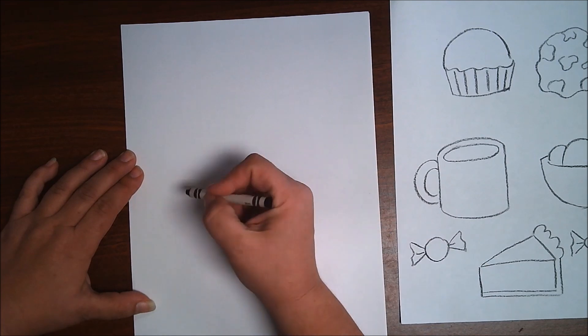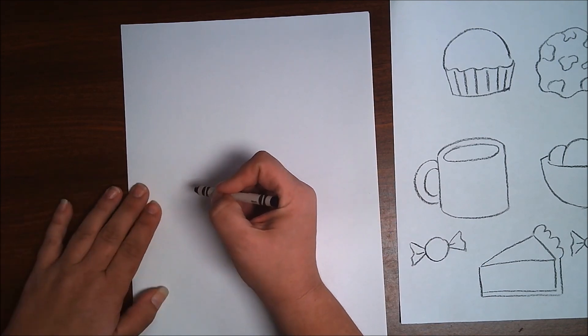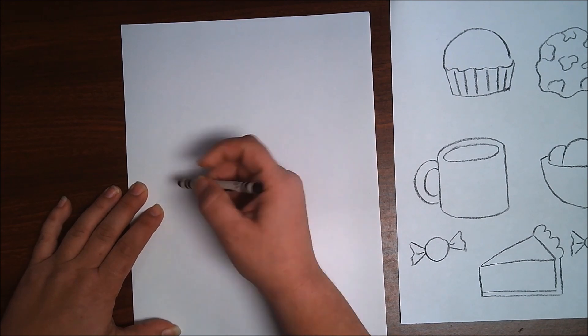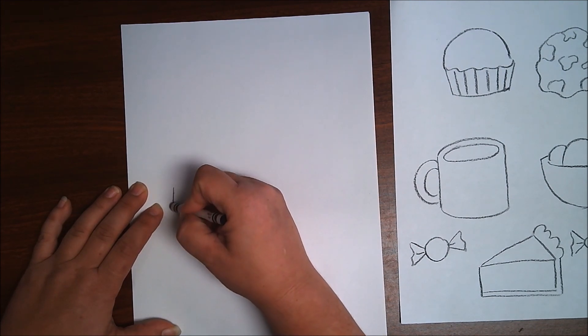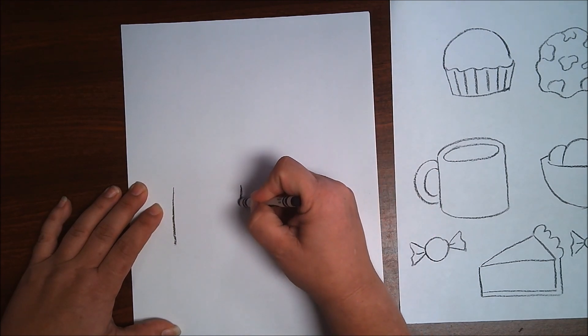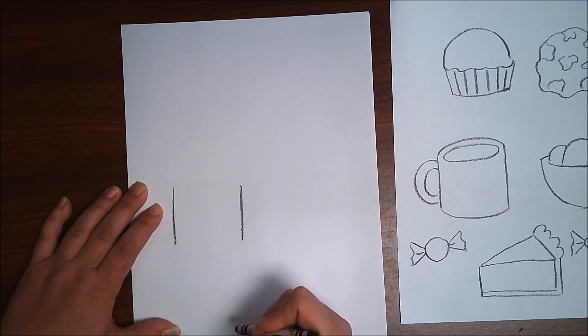So I want to draw two straight lines that are parallel. That means that they are going in the same direction but they're not going to touch. So I'm going to decide how tall my cup is going to be and try to do it about the same on the other side.